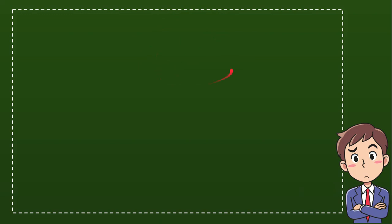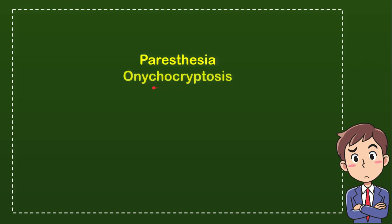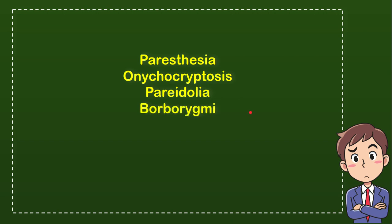The first option is paresthesia, the second one is onycocryptosis, the third one is pareidolia, and the last option is barbaric. So from these four options, which one do you think is the correct answer?